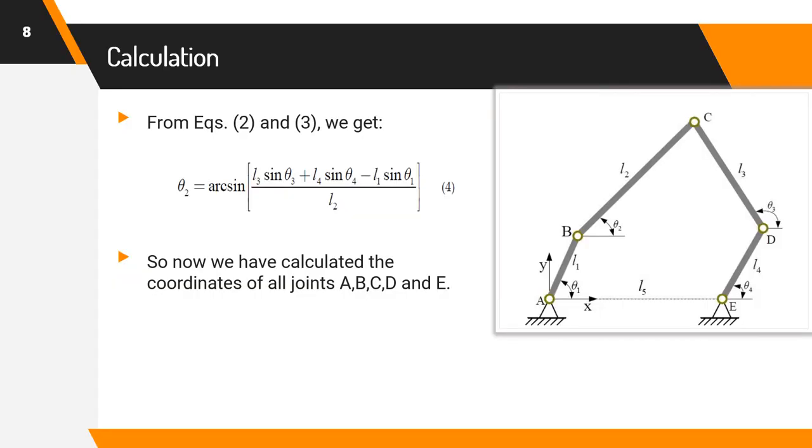From equation 2 and equation 3, we can calculate theta 2 as follows. Theta 2 equal to sin inverse of L3 sin theta 3 plus L4 sin theta 4 minus L1 sin theta 1 divided by L2. So now we have calculated the coordinates of all joints A, B, C, D and E.